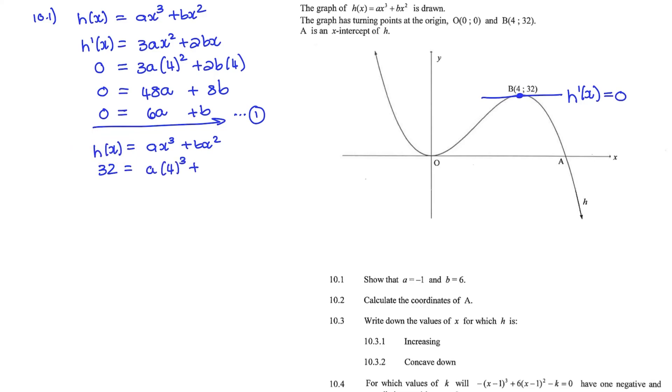And the x value can be substituted with 4. And if I multiply out, I have 32 equals 64A plus 16B. And now I can divide everywhere by 16. So 2 equals 4A plus B. And that is my second equation.